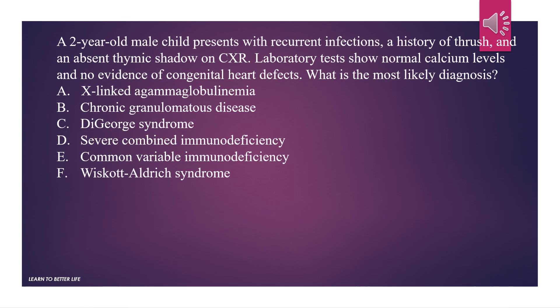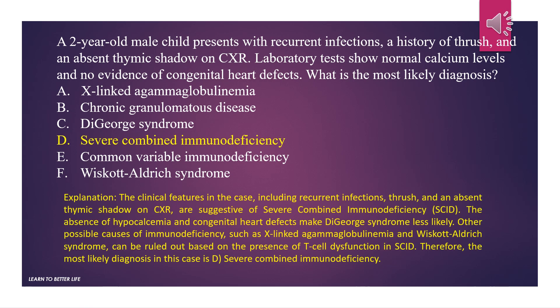A 2-year-old male child presents with recurrent infections, a history of thrush, and an absent thymic shadow on chest X-ray. Laboratory tests show normal calcium levels and no evidence of congenital heart defects. What is the most likely diagnosis? Options include X-linked agammaglobulinemia, chronic granulomatous disease, DiGeorge syndrome, severe combined immunodeficiency, common variable immunodeficiency, and Wiskott-Aldrich syndrome. The answer is D, severe combined immunodeficiency.